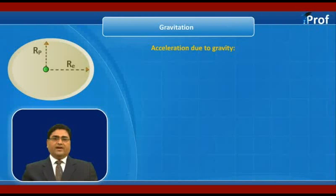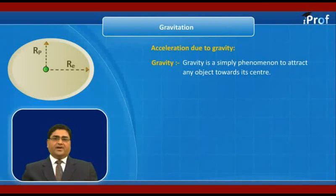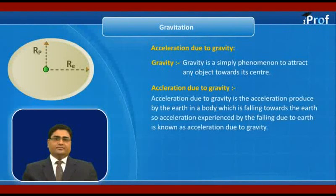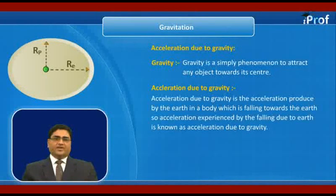First of all, what is acceleration due to gravity and what is gravity? Gravity is simply a phenomenon to attract any object towards its center. The acceleration due to gravity is the acceleration produced by the earth in a body which is falling towards earth. Acceleration experienced by a falling body due to earth is known as acceleration due to gravity.